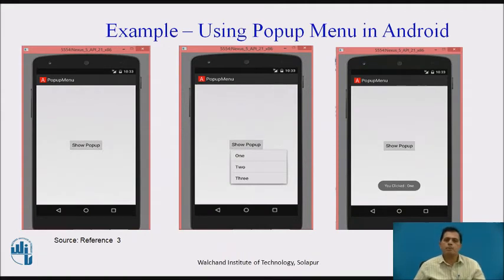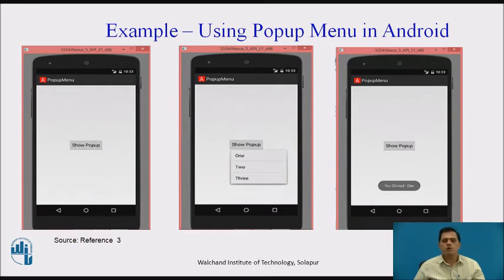The third example shows using a pop-up menu in Android. There are three diagrams. In the first, a button labeled 'Show Pop-up' is created. When the user clicks it, menu items are displayed in the pop-up menu as shown in the middle diagram — options one, two and three. In the third diagram, when the user clicks any menu item, a toast message is displayed at the bottom of the screen.